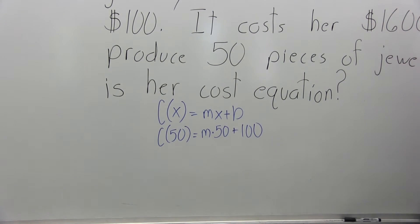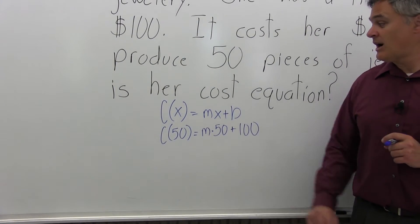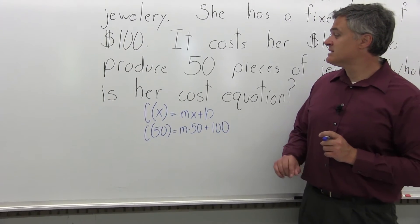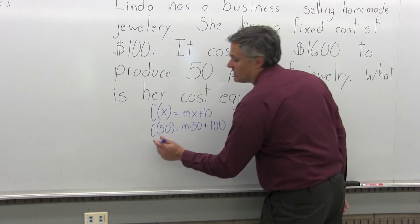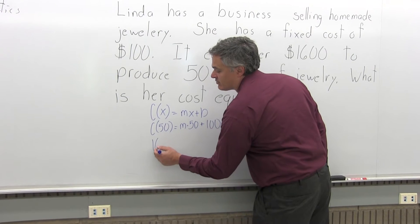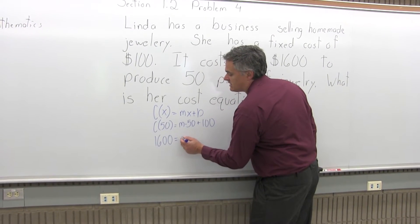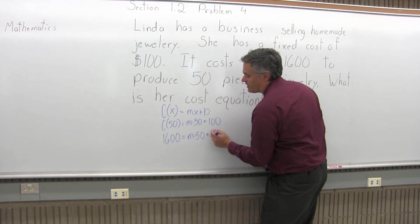So what we really need to know is M, the cost per item or marginal cost. To produce 50 items, the problem says it's going to cost Linda $1,600. So the left side of the equation becomes 1600 = M times 50 plus 100.